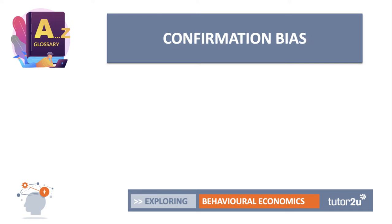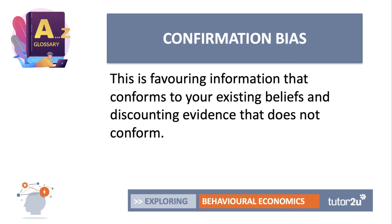Confirmation bias is quite interesting. This is favouring information that conforms to your existing beliefs and essentially ignoring evidence that does not conform. Confirmation bias means only paying attention to information that reinforces your beliefs about particular issues — climate change, minimum wage, Brexit, and so on. It often involves living in an echo chamber, where you only follow people on social media who share your viewpoints, or choosing news sources — newspapers, magazines, and online outlets — that present stories supporting your view.